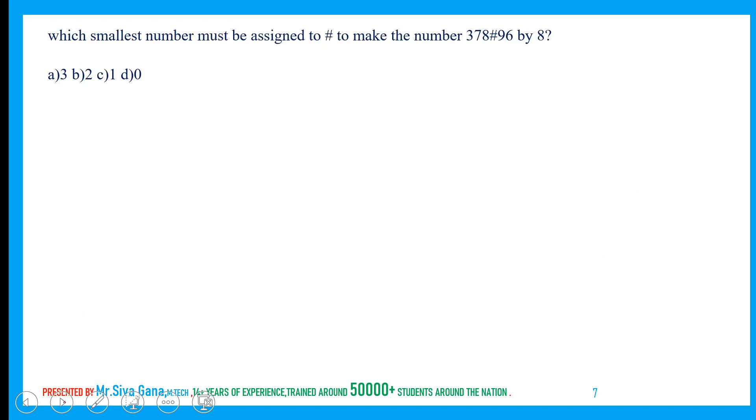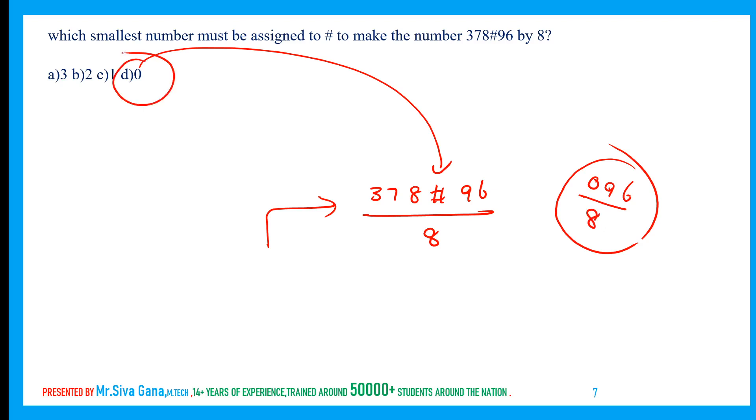Which is the smallest number must be assigned to A to make the number 378A96 divisible by 8? Divisibility rule is one of the important topics. There is definitely this type of question in upcoming TCS drives also. Smallest number - if I substitute 0 in place of A, the divisibility rule of 8 is last 3 digits. If A equals 0, then the last 3 digits is 096, which is divisible by 8. So definitely the smallest is 0.